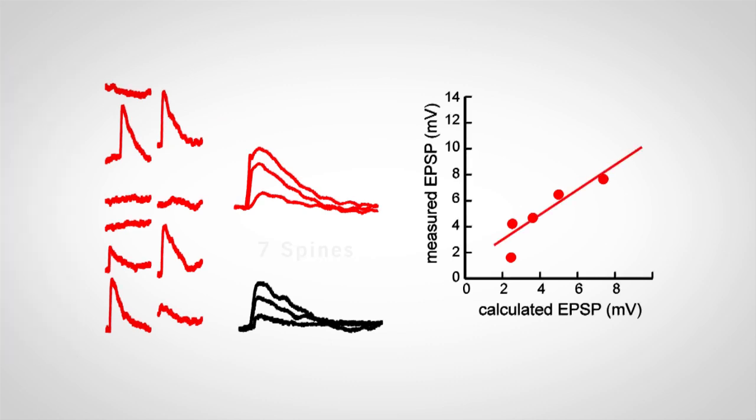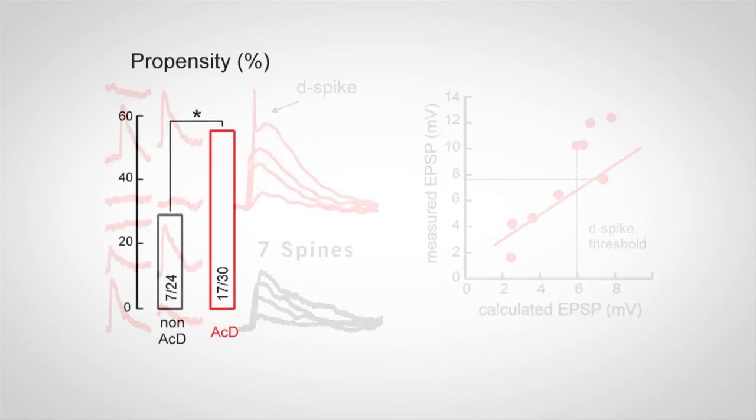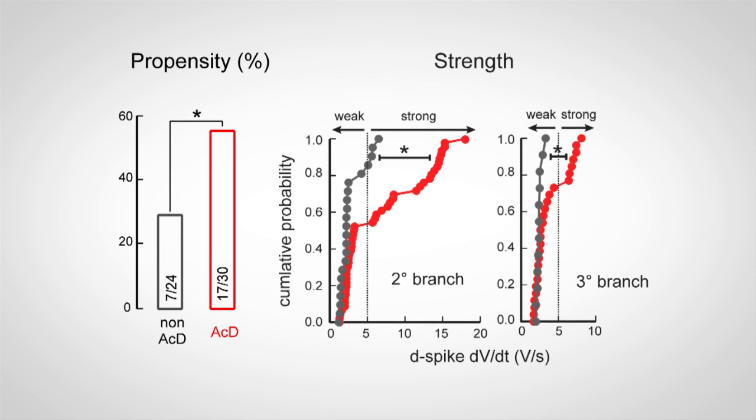However, greater stimulation generated superlinear dendritic spikes. The axon-carrying dendrites are then intrinsically more excitable, more capable of generating superlinear dendritic output, that is, more and stronger dendritic spikes. These dendritic spikes in turn generate action potentials with shorter latencies.